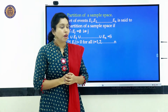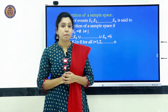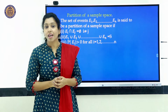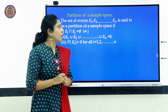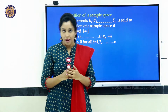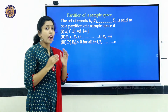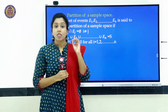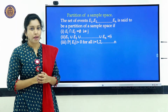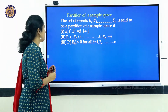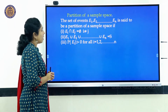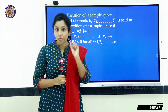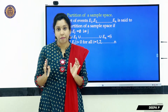Let's go through the definition of partition of a sample space. A sample space is the collection of all outcomes of a random experiment, denoted by S. Now, suppose we have a set of events E1, E2 up to En. When do we say those events form a partition of a sample space? They form a partition if the set of events satisfies three conditions.